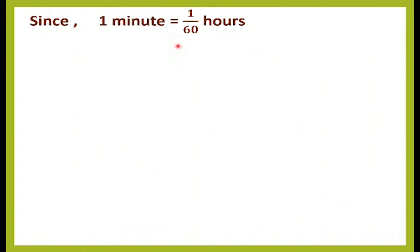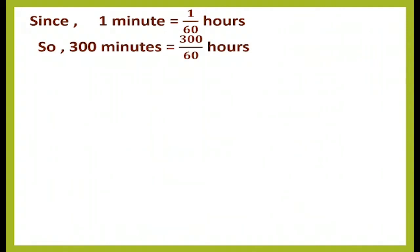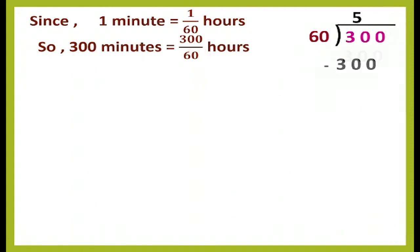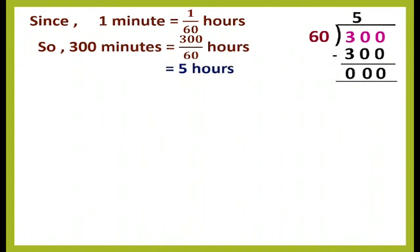Since 1 minute equals 1/60 hours, we convert 300 minutes to hours: 300 ÷ 60. Dividing, we get 5 hours. So when converting 300 minutes into hours, we get 5 hours. The total halting time is 5 hours.